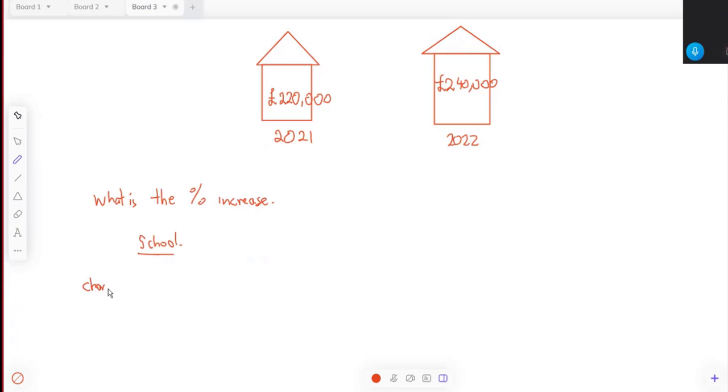We'll do it the school way again. To find a percentage increase or percentage change, you do the change divided by the original, times by 100. How do we get that change? We do the new price take away the old price, and then divide that by the original, which is 220,000. That's just going to give us 20,000 divided by 220,000, and we've got to times it by 100.